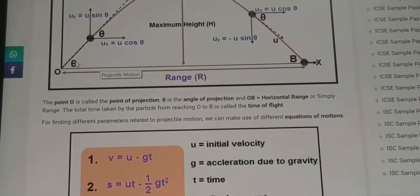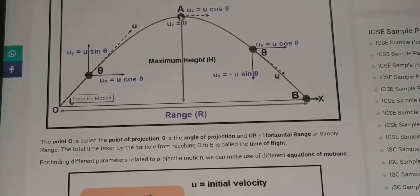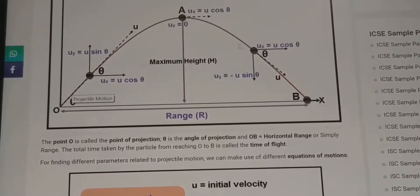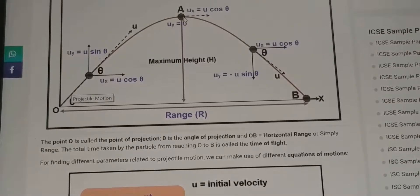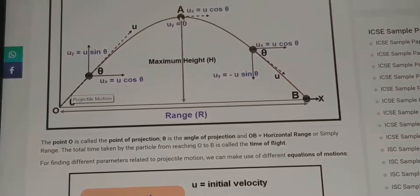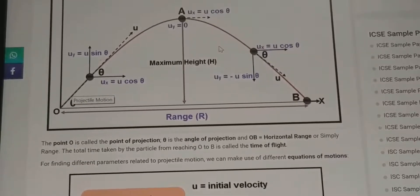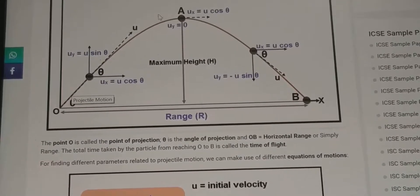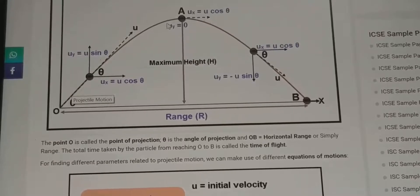Initially, splitting the velocity gives two components: u sinθ along the vertical and u cosθ along the horizontal. The particle moves gradually upward to a specific point of maximum height, then returns following a curved path. At the topmost point, the vertical velocity must be zero — if it were not zero, the particle would not change its vertical direction. The horizontal component does not change because in the horizontal direction the particle is not changing its direction of motion.